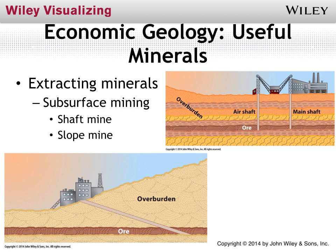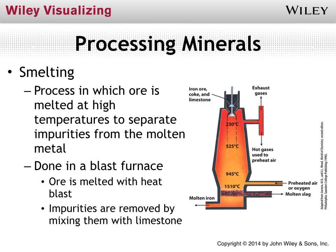The other way of extracting minerals is through subsurface mining, accomplished by a shaft mine — typically drilling a shaft more or less straight down and then tapping into the ore — or slope mining. As far as processing those minerals, we mentioned at the beginning of this chapter the process called smelting, which is when we basically heat whatever ore we're trying to extract the mineral from at very high temperatures to get rid of all impurities from the molten liquid metal. This process is done in a blast furnace, and we remove impurities by mixing them with limestone.